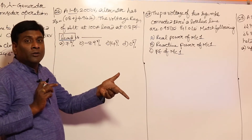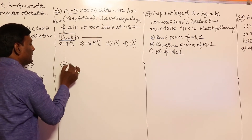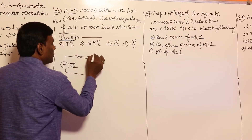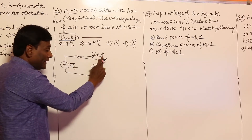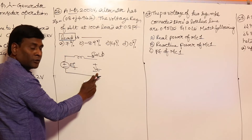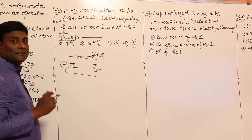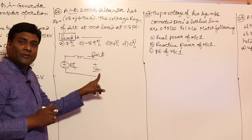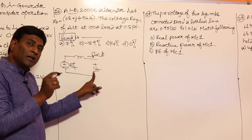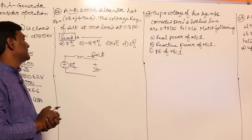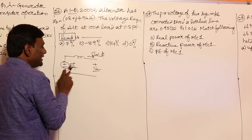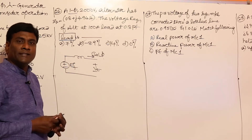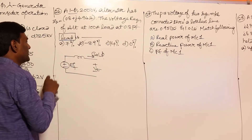At leading conditions, compared to sending-end voltage, receiving-end voltage will be more. So Ef will be less than Vt, meaning Ef minus Vt divided by Vt will be negative. So voltage regulation should be negative — you are not supposed to need to solve this in the exam. But let us solve it anyway.